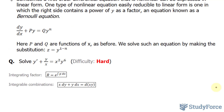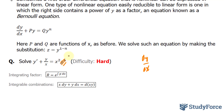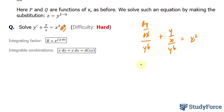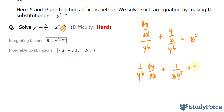The first thing I want to do is convert y' into dy/dx and make the right side in terms of x only. I can do that by dividing all terms by y⁶. Dividing each term by y⁶: the first term becomes (1/y⁶)(dy/dx), the middle term y/x divided by y⁶ becomes 1/(x·y⁵), and the right side becomes x².